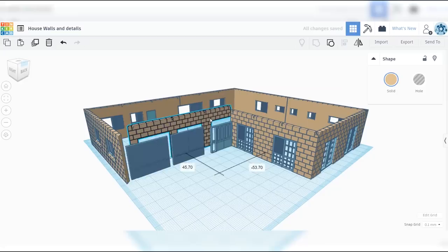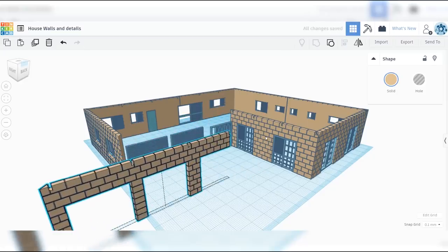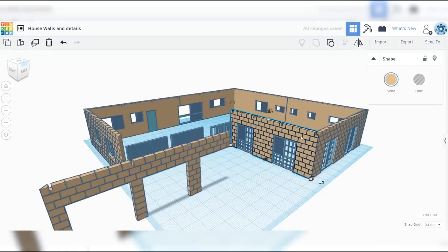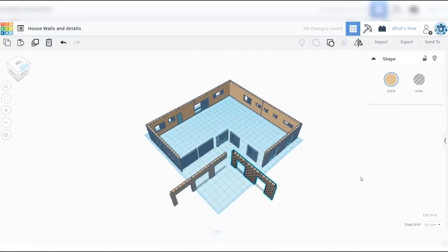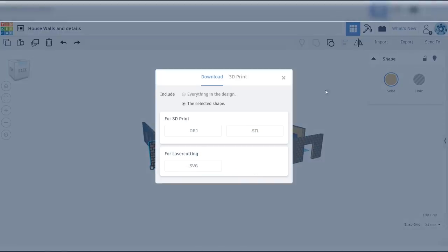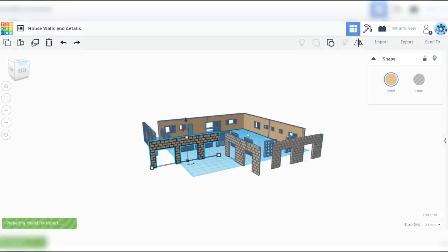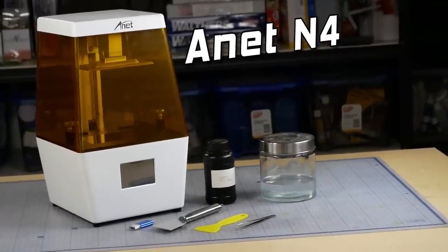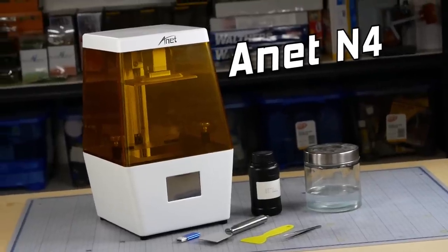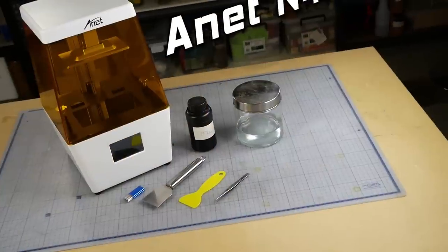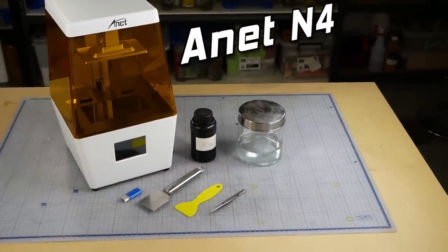Once we have the main structure of the house made, including the doors and windows, I can export them to the 3D printer slicing program. You just want to make sure to export it as an STL file. The printer I'll be using to create the model is the new Anet N4 resin-based 3D printer, which will be perfect for printing even the very fine details like the screen door and windows.